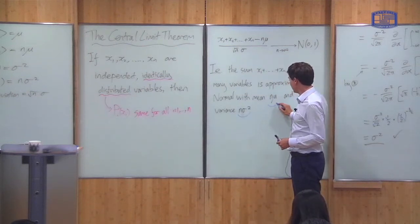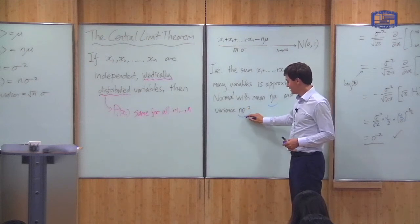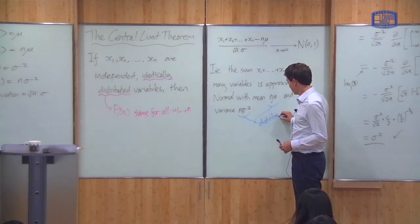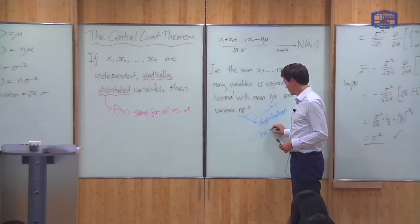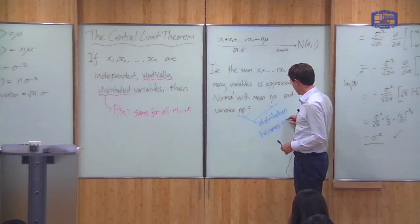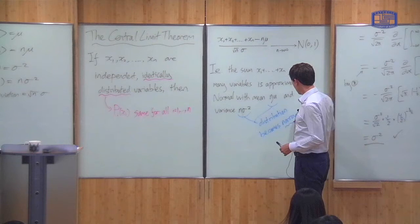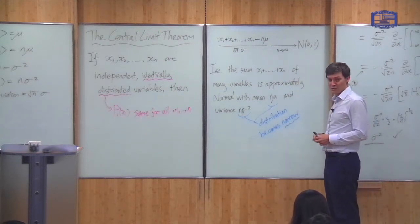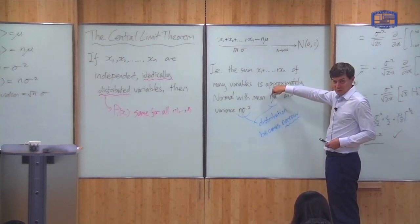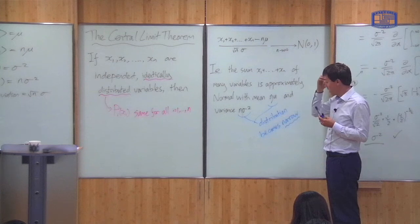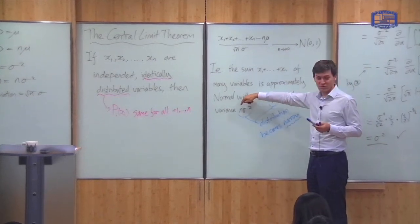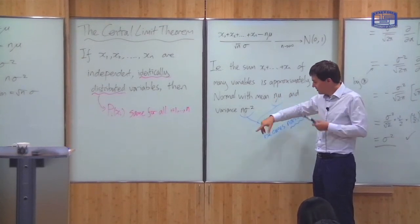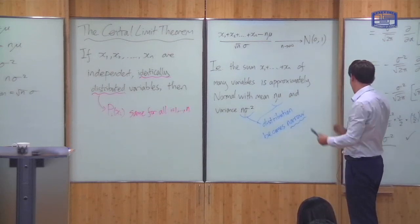An important consequence of this result is that the distribution becomes narrow. The mean grows like n, but the width of the distribution is the square root of the variance, and that grows like the square root of n. So the mean grows like n but the width only grows like the square root of n, and therefore the distribution itself becomes narrow.